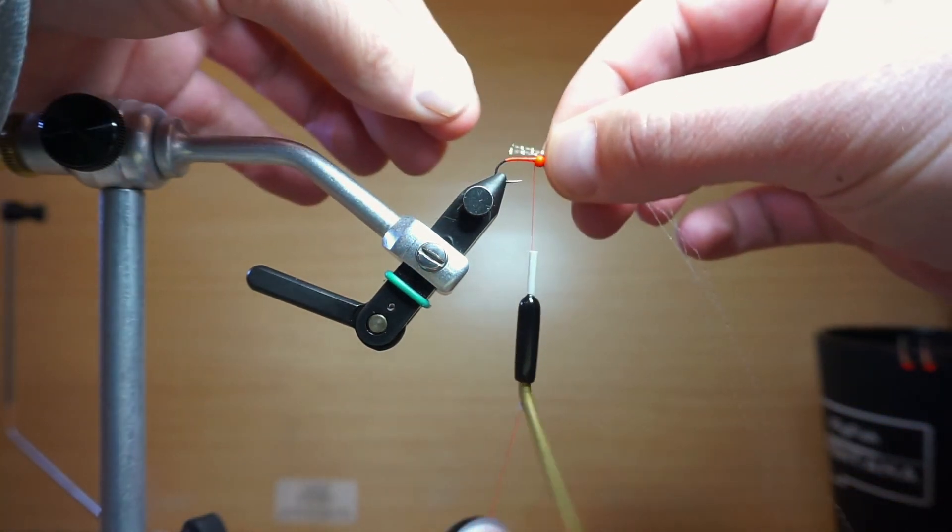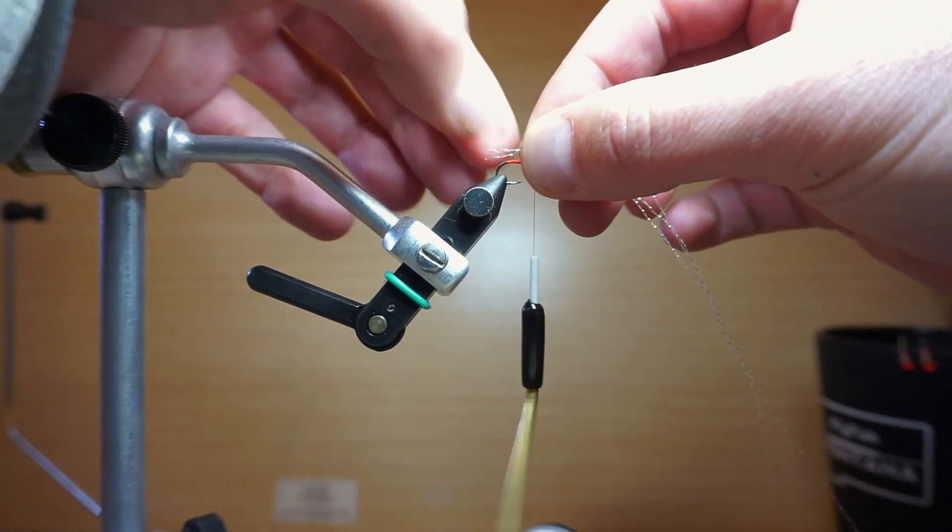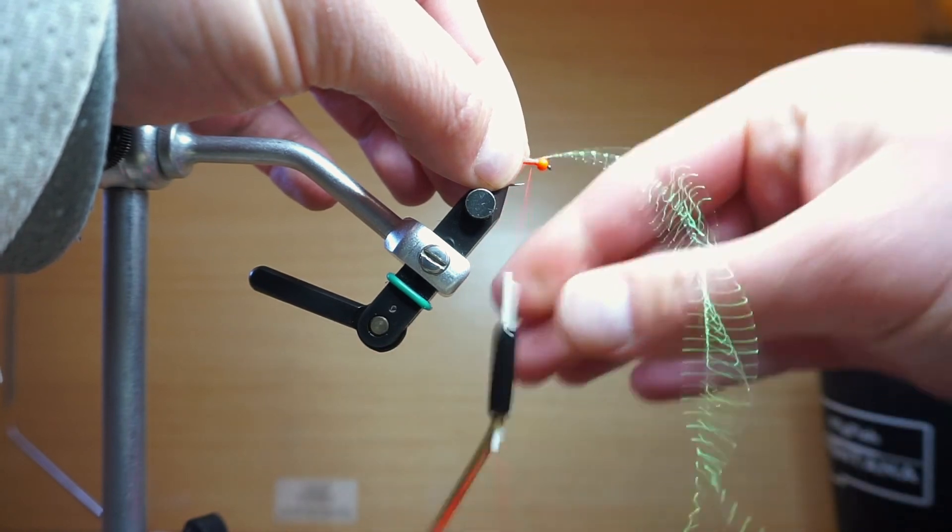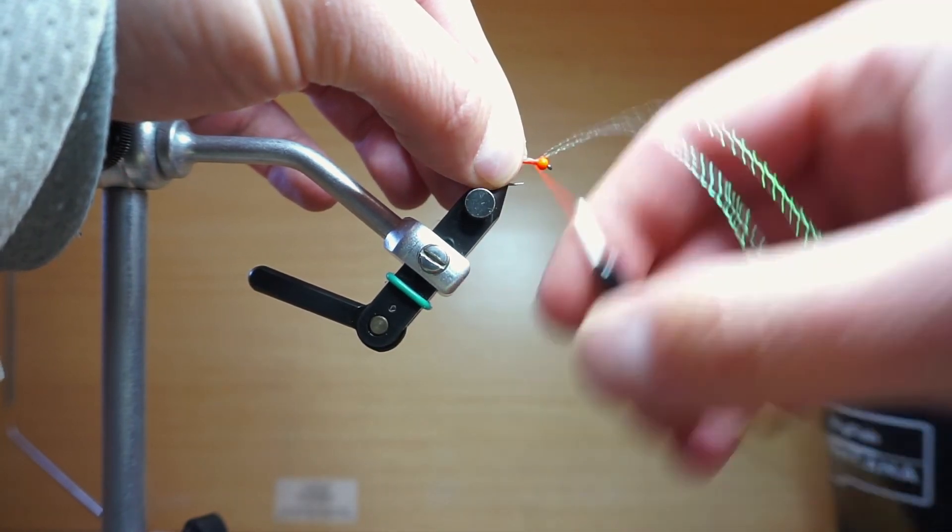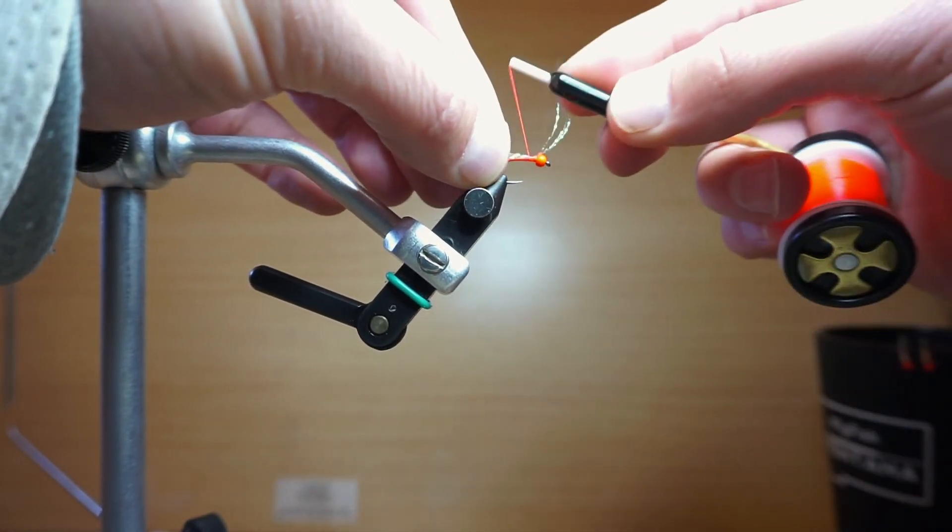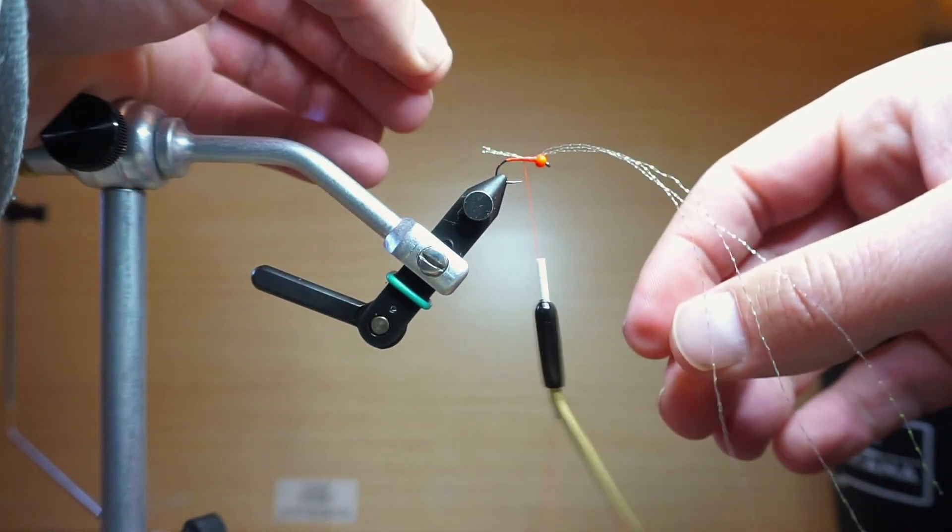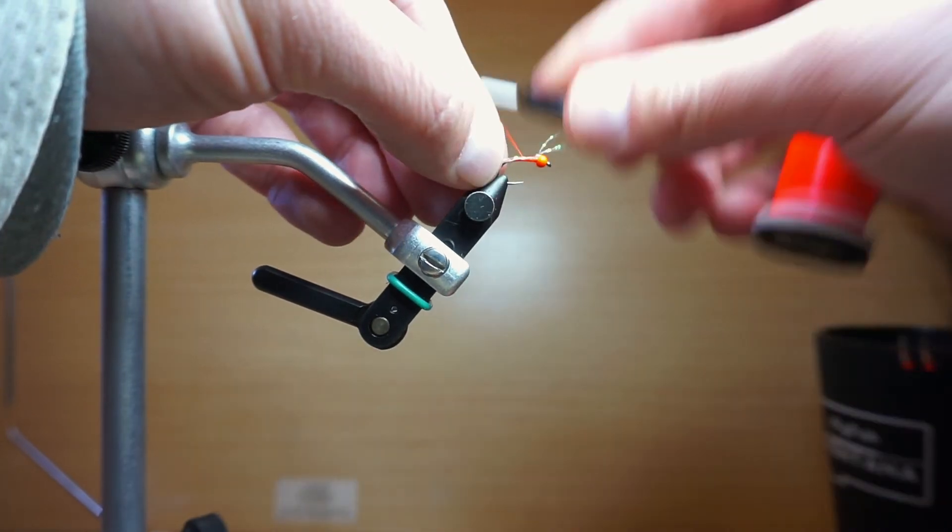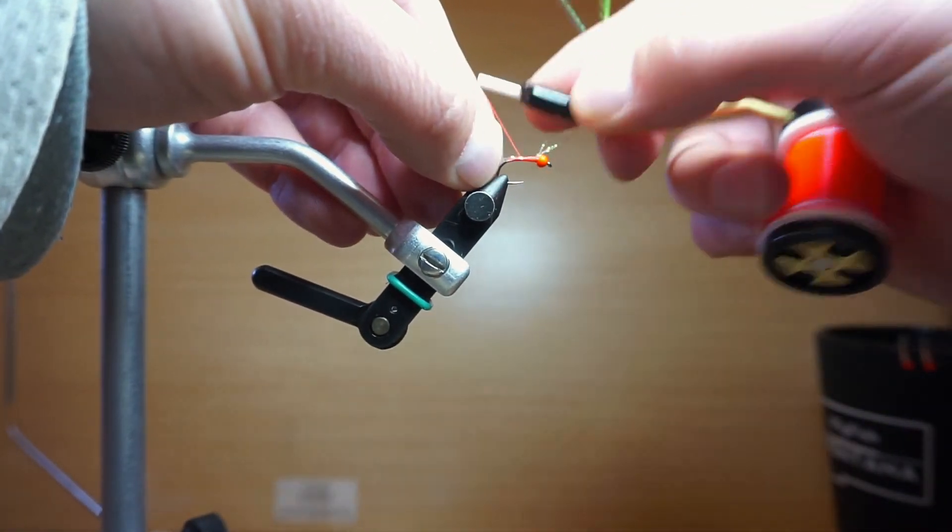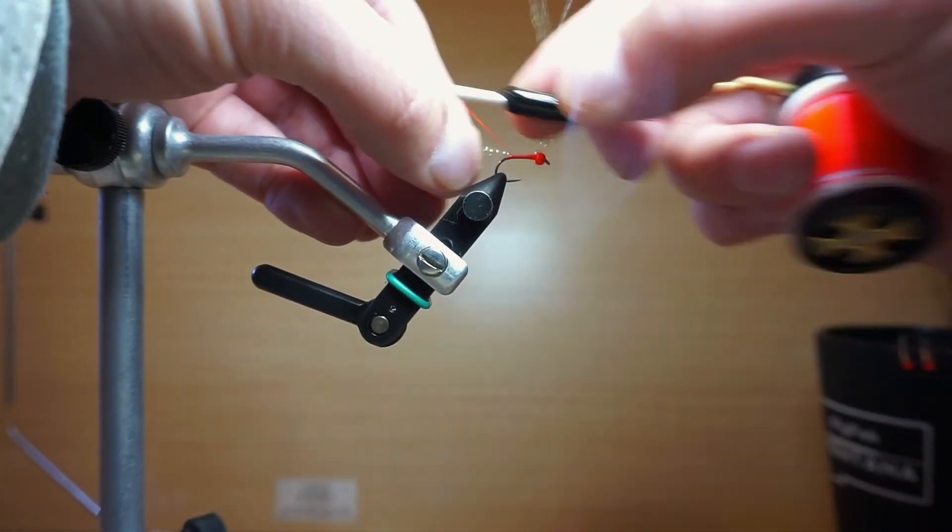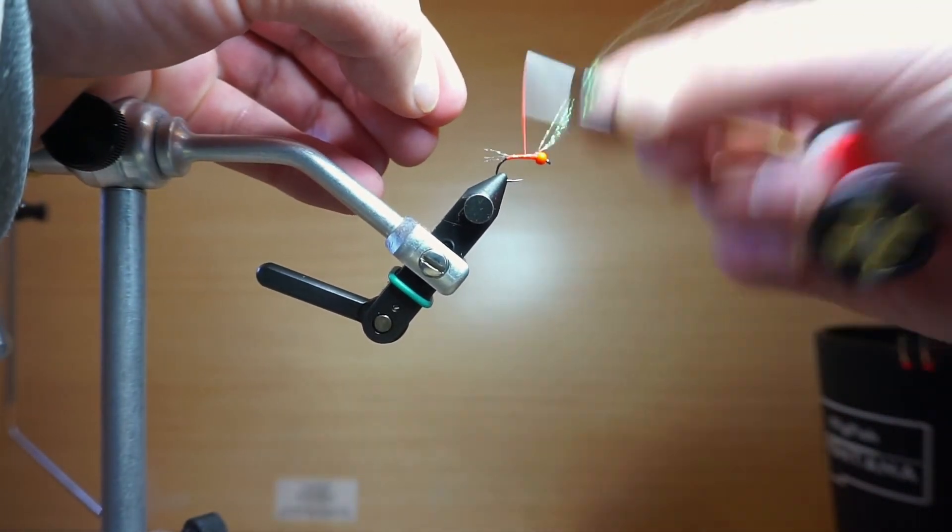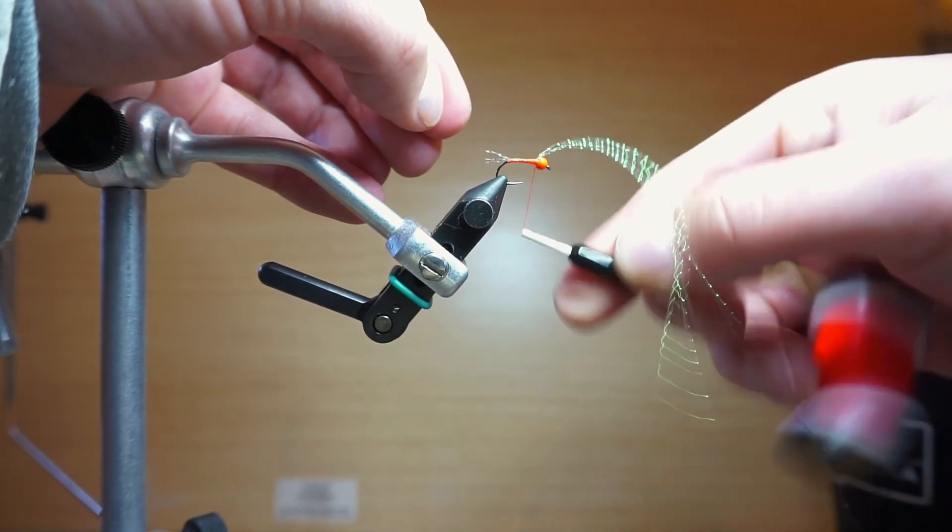So I'm going to go ahead and tie in this crystal flash as the tail. Two or three strands works just fine and I'm hoping for about half the length of the shank of the hook. I don't like my tails too long on these. Just a little bit of extra flash and movement in the water. You can always adjust your length after you've only put a couple wraps in and go ahead and attach that all the way back down to the bend of the hook and then bring my thread back up to the bead.